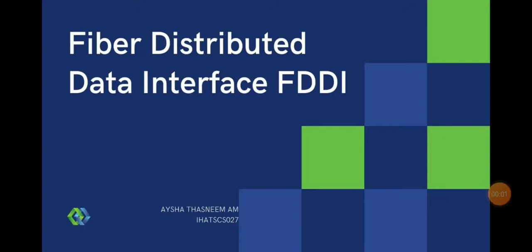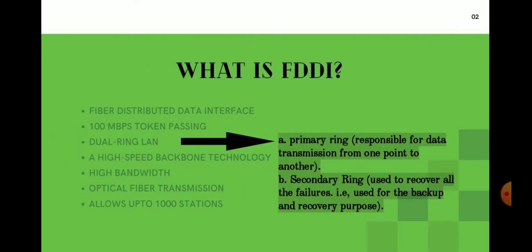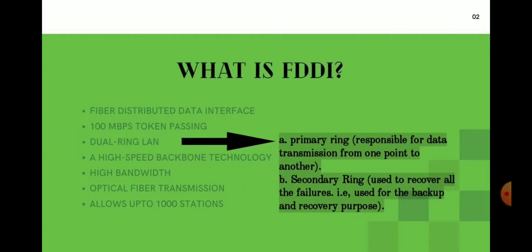Fiber Distributed Data Interface, or FDDI, is a 100 Mbps token passing dual ring technology. It is a high-speed backbone technology that uses optical fiber for transmission and allows up to 1000 stations.